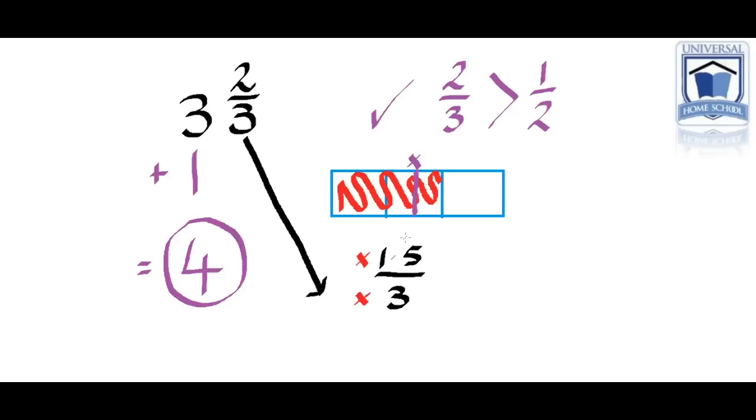The question now is, well 1.5. We can compare that to the numerator 2 over 3, 2. So is 2 greater than 1.5 or is 2 less than 1.5? Well 2 is greater than 1.5 automatically telling us that it's greater than a half. 2 thirds is greater than a half. So we add 1 to the 3 and we make it 4. 3 and 2 thirds is 4 when we round it.